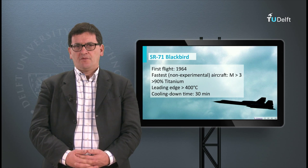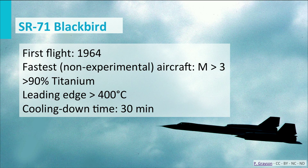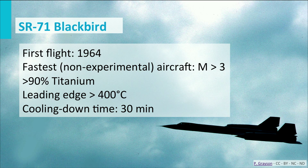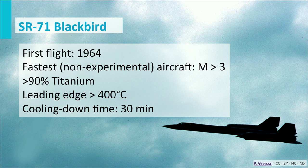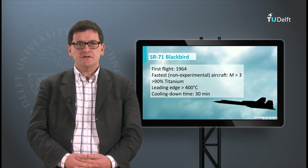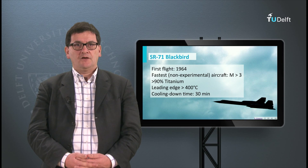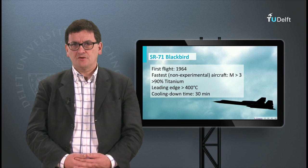Another famous example of a high-temperature application of titanium is the SR-71 Blackbird. This aircraft, which is a military reconnaissance aircraft, could fly at high speed and high altitude — well over Mach 3. Because of the aerodynamic heating of the skin and structure, more than 90% of it was made of titanium alloys. Just as an indication, the leading edges are exposed to temperatures of more than 400 degrees Celsius, and after landing the aircraft needed quite some time to cool down.